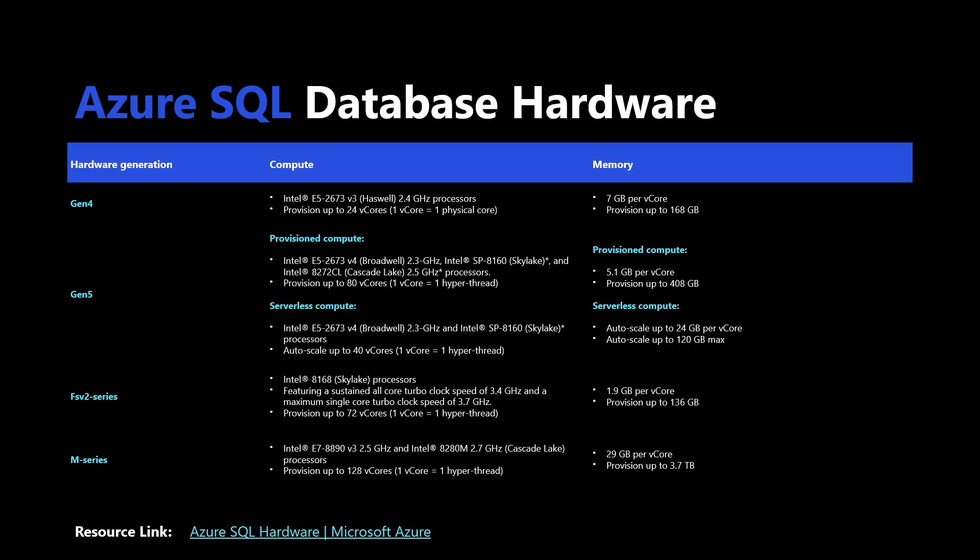I mentioned hardware considerations in the previous slide. There are different hardware generations that Microsoft provides — at the top level, Gen 4 is the base, then Gen 5 broken into provisioned and serverless compute, the FSV2 series, and then the M series. The M series is the latest and greatest, offering tremendous compute power, but it is very expensive — as is the F series. We will more than likely be doing Gen 4. For a very small project this isn't necessarily top of mind, but it's something to consider as you move into more advanced projects.